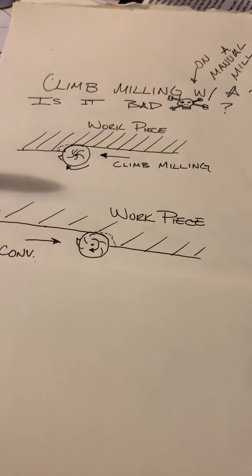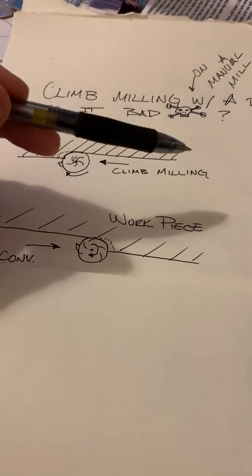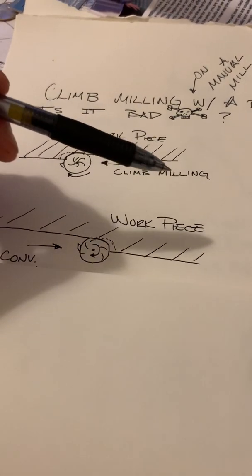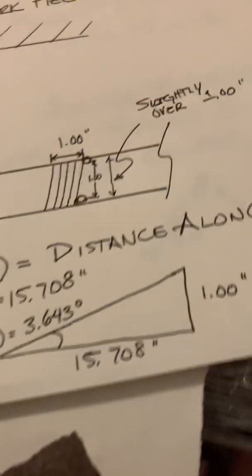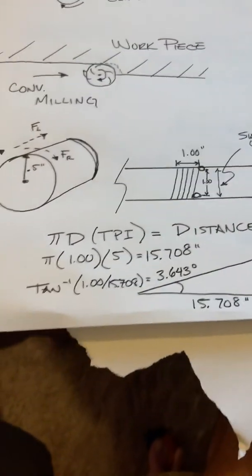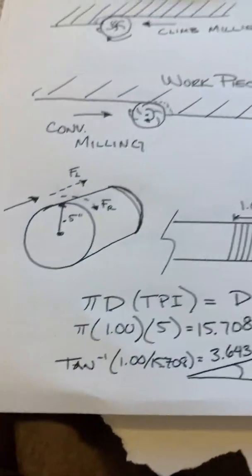So why would climb milling be bad? Well, if you're running on a frictionless ball screw that has no backlash, then you feasibly could end up with the mill climbing away from you and running away. So I wanted to go through and see, if that's the case, how is it strong enough? Can it turn that pulley out of my hand hard enough that it break my hand? So let's do a little math right quick.